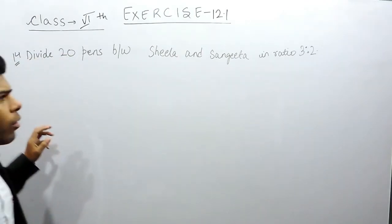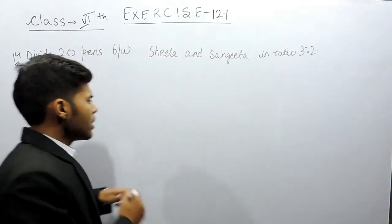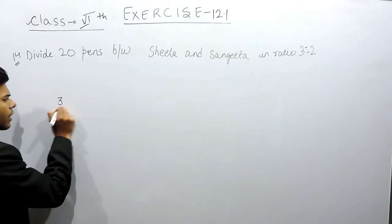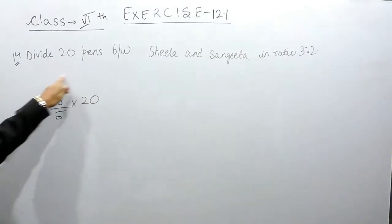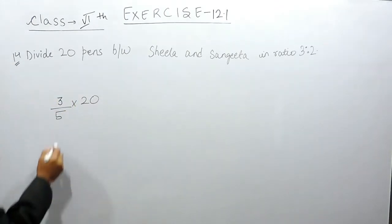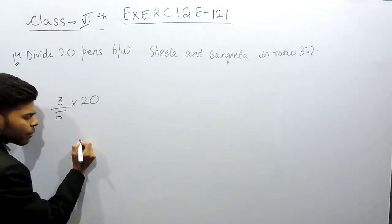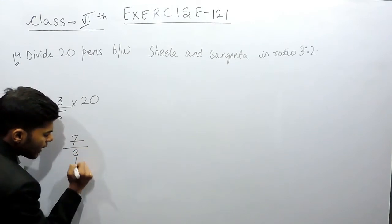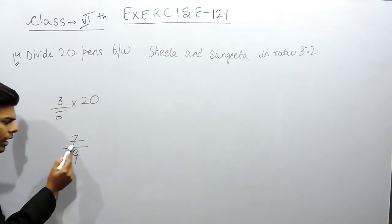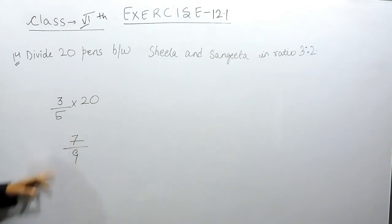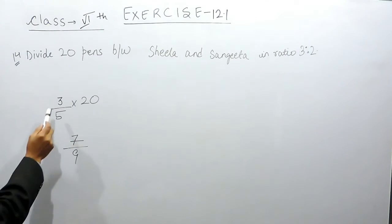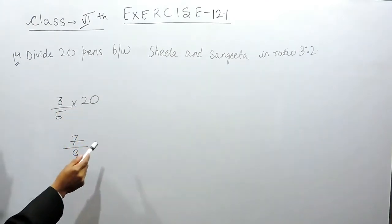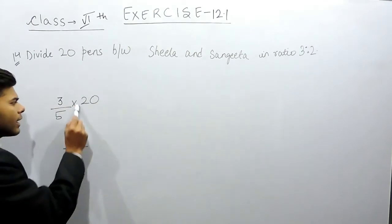Now, first of all before solving, let me tell you how to solve this. We will do 3 by 5 into 20 to find Sheila's number of pens. The reason is similar to fractions — if a fraction is 7 by 9, that means out of total 9 parts, 7 parts are there. Here also, out of total 5 pens, 3 are with Sheila. The total number of pens are not 5 but 20, that's why we multiply by 20.